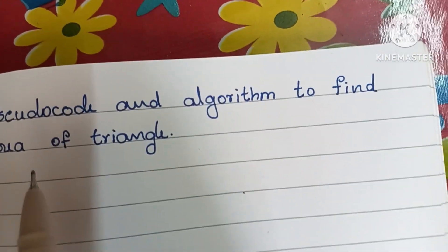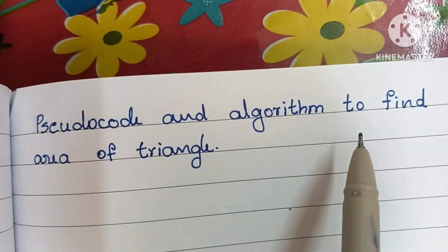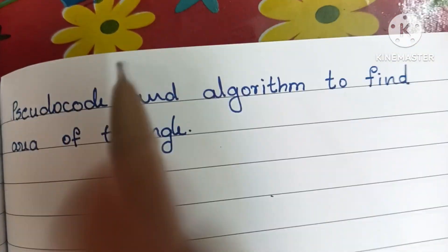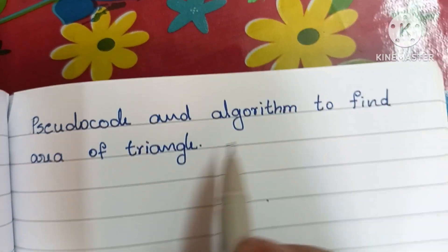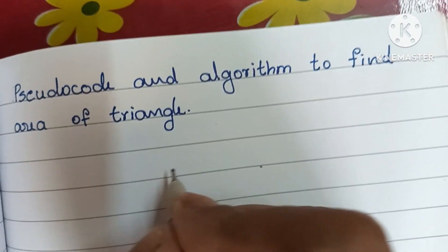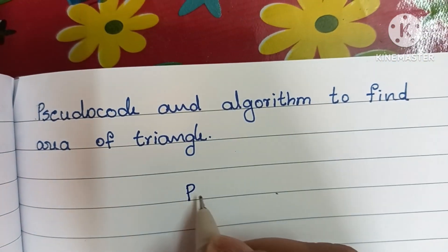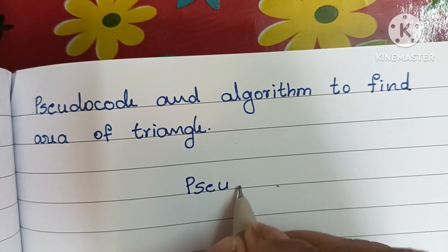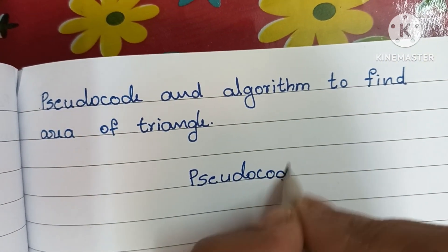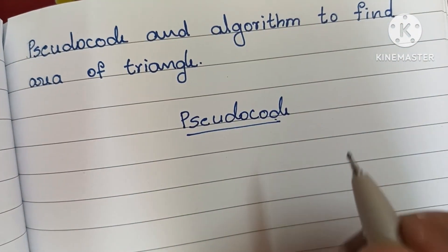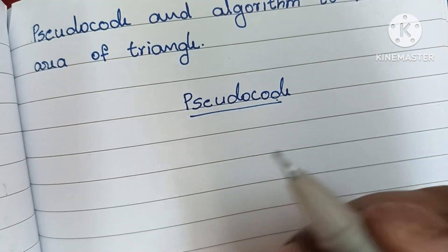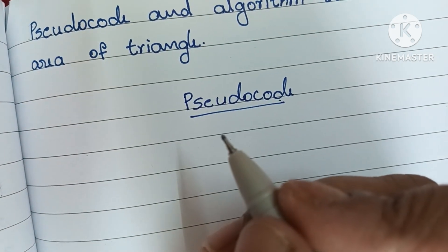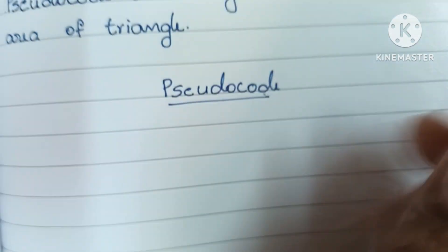In this video we are going to learn how to write pseudocode and algorithm to find the area of a triangle. Pseudocode is a description of a solved problem written in the form of natural language like English, instead of a programming language.